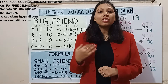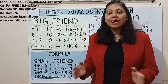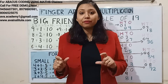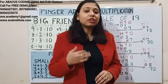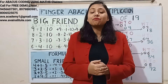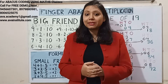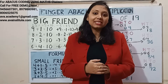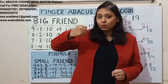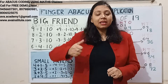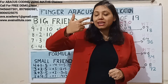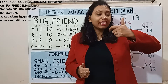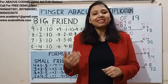Now let us start the class. I have already repeated the rules of multiplication many times, and I hope you have already watched my previous addition, subtraction, and multiplication series. You know that this is the ones place and this is the tens place. The thumb is five and fingers are one each in ones place, and the thumb is 50 and fingers are 10 each in tens place.